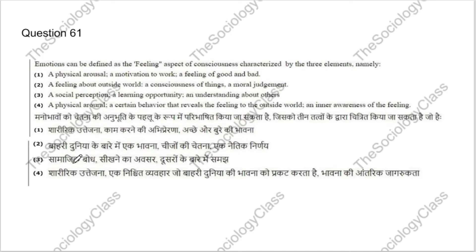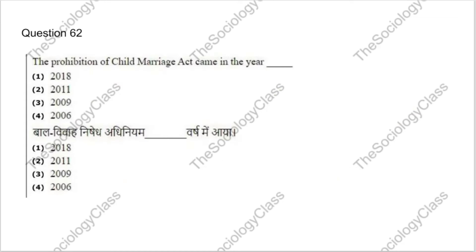Question 61: Emotions can be defined as the feeling aspect of consciousness characterized by three elements. The correct answer is D — the three elements are: a physical arousal; a certain behavior that reveals the feeling to the outside world; and an inner awareness of the feeling.